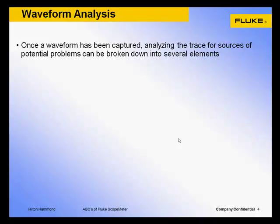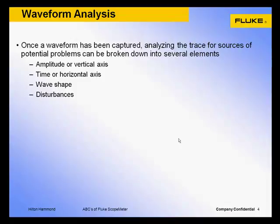To become proficient in analyzing waveform traces, we must train our eye to always look in these four domains. First, amplitude or along the vertical axis. Second, time or along the horizontal axis. Third, look for waveform shape issues. And fourth, look for any signs of disturbances that may be influencing the signal. Train the eye to scan up and down the vertical amplitude, then horizontally back and forth across the waveform time span, then look for waveform shape patterns, and lastly keep a lookout for any external disturbances.